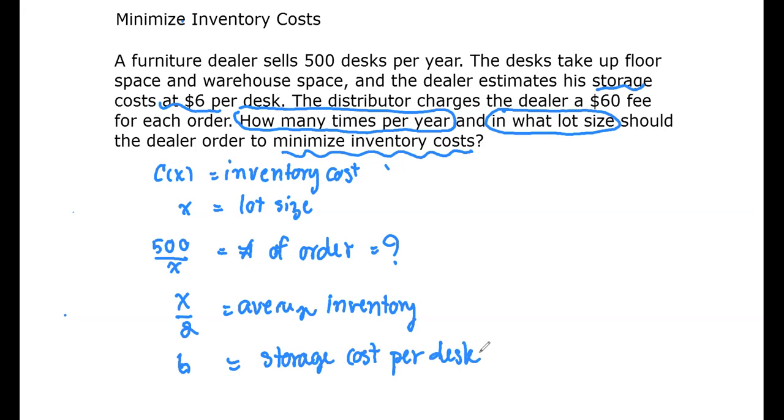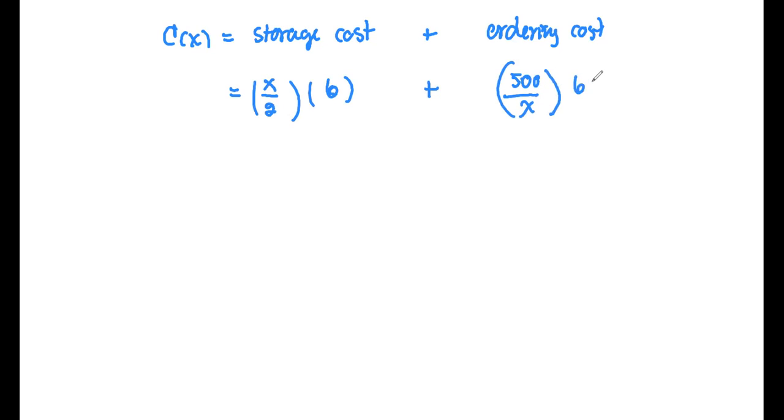Next, we are going to form the equation for C(x). The inventory cost will be the cost from the storage cost plus the ordering cost. For the storage cost, the average of the desk for each order is going to be x over 2 multiplied by $6 per desk as a fee. For the ordering cost, the total order would be 500 divided by x, and the fee for each order is $60.